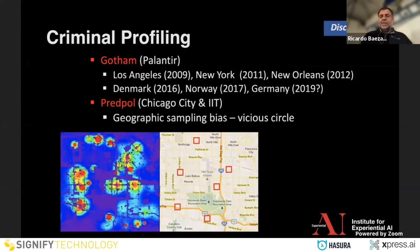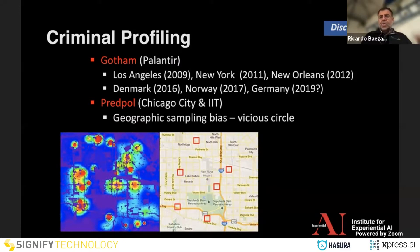Criminal profiling has been done not only for prisons but also when police stop a person in the street. For example, Palantir has a famous system used in some US cities without the knowledge of most people, and even in some European countries. In Chicago, a system built with IIT has a particular case of geographic sampling bias: you police the region where you think there are more criminals, and then you reinforce that belief because crimes not reported elsewhere won't be in the system.